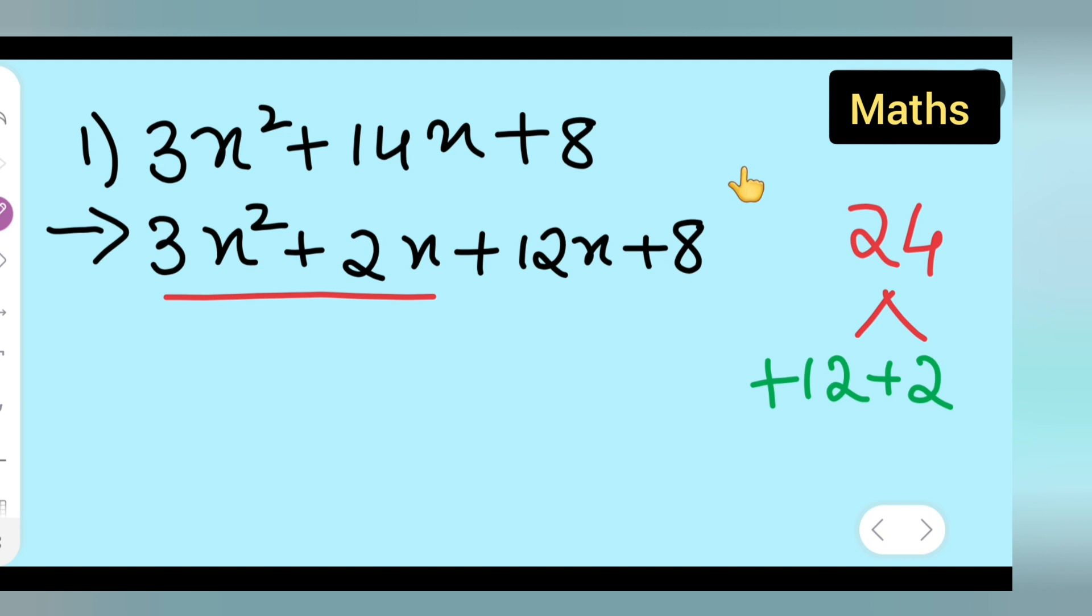Now what is common from this? x is common, and remaining is 3x plus 2. So here only x is common, and it is 3x plus 2.